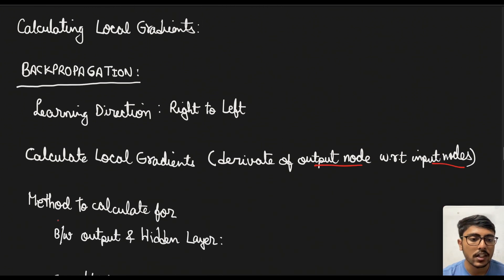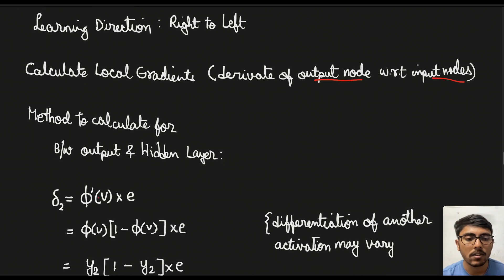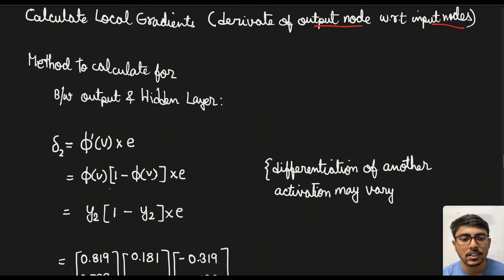So now first we calculate the local gradients between the output and the hidden layer. So it is given by the formula δ2 = φ'(v) × e. e denotes the error and φ' denotes the differentiation of the activation function. So for the sigmoid function it is equal to φ(v) × (1 - φ(v)). It is a standard formula for sigmoid function but if the activation function is different then it will change.